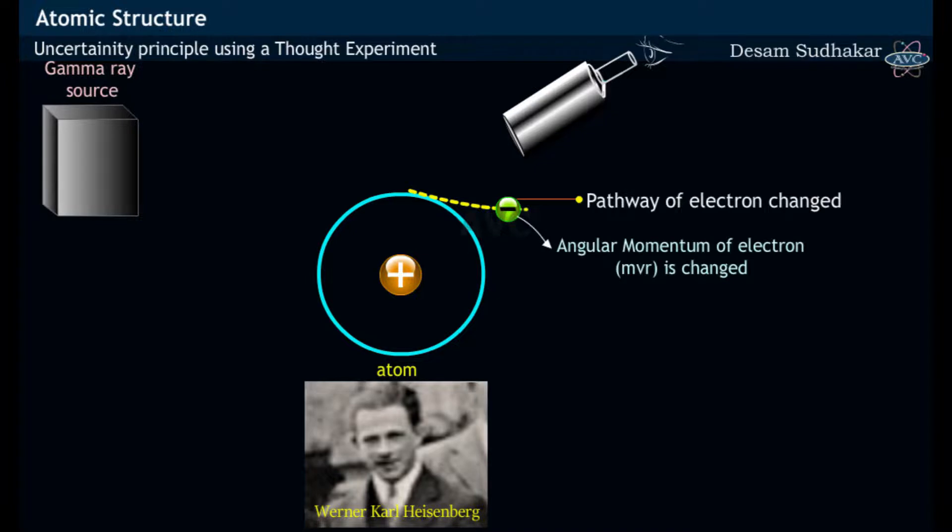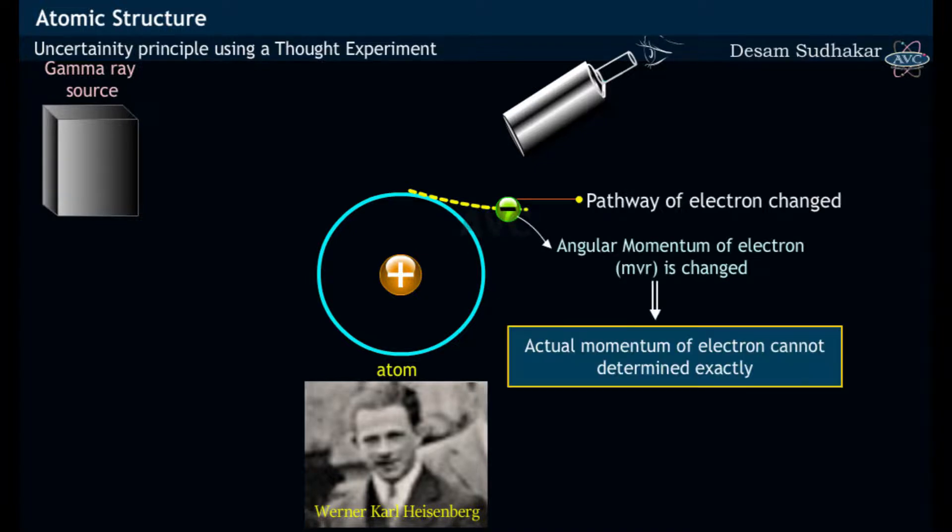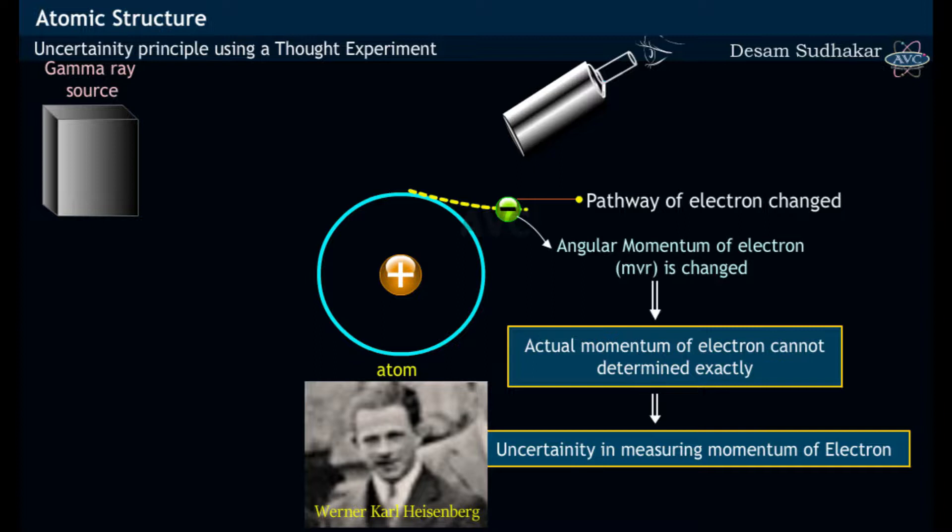The momentum of the electron is changed, as a result of which the actual momentum of electron cannot be determined exactly, i.e., there exists an uncertainty in measuring the momentum of an electron.